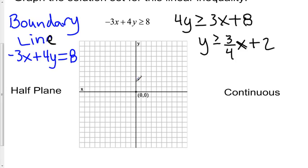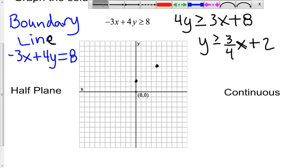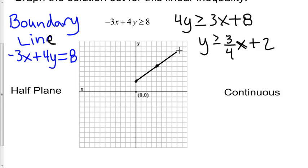Well, my y-intercept is 2. And if I use the slope, I go up 3, 1, 2, 3, over 4, 1, 2, 3, 4. I can plot another point and I can simply use my line tool here to draw my line. So this is review from Math 10, graphing lines.